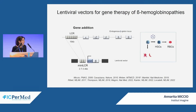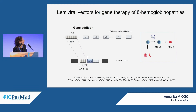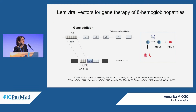In lentiviral vector gene addition strategy, a beta-globin transgene is inserted into a lentiviral vector under the control of an erythroid-specific promoter and erythroid-specific enhancers, usually derived from the locus control region. We typically take two or three enhancer elements and insert them into the lentiviral vector to create a mini locus control region. The lentiviral vector then integrates this therapeutic cassette into HSCs, which should give rise to normal red blood cells.